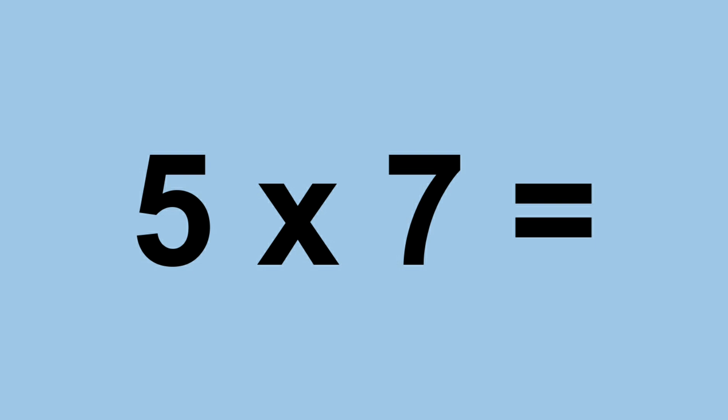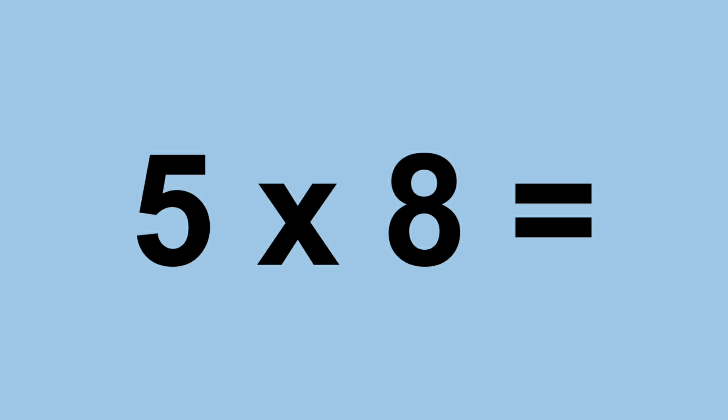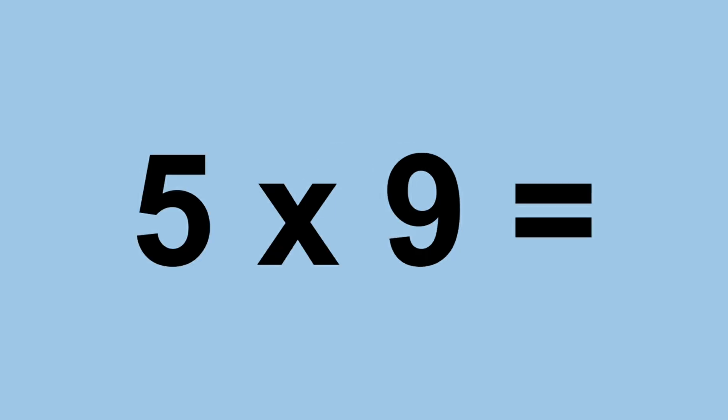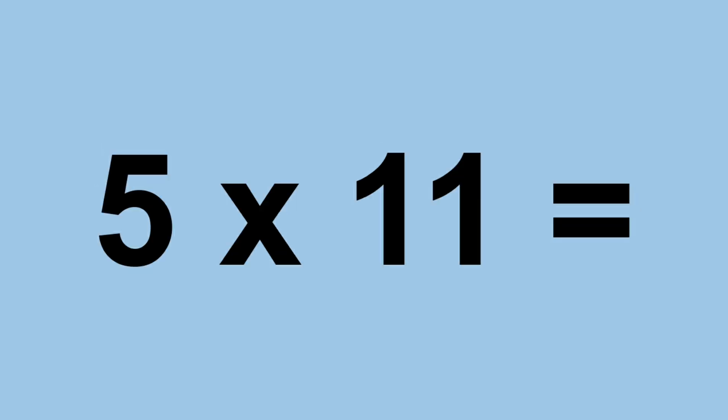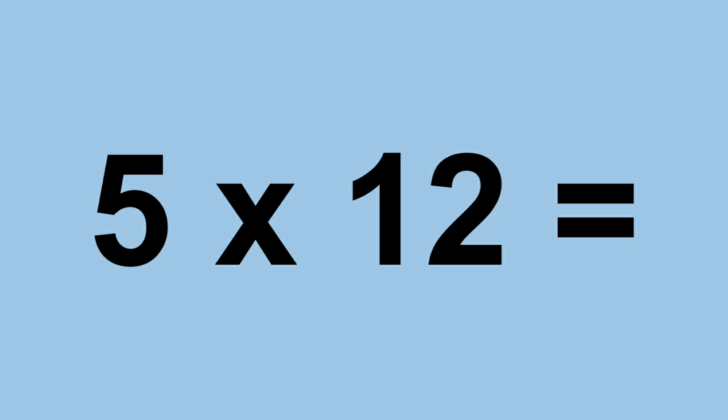Five times seven equals thirty-five. Five times eight equals forty-five. Five times nine equals forty-five. Five times ten equals fifty. Five times eleven equals fifty-five. Five times twelve equals sixty.